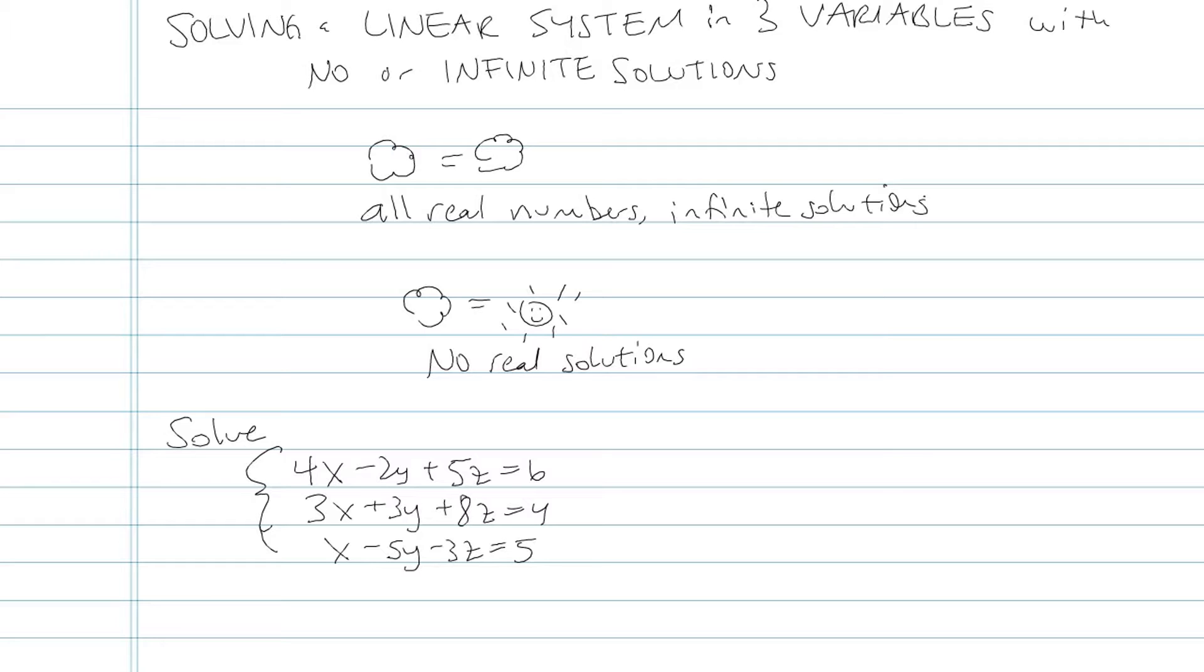And if we have three planes that intersect in infinitely many points, we call that infinite solutions. Sometimes you have three planes that will intersect at a line, and that's something that's a little bit different. That's still a version of infinite solutions because a line, of course, has infinitely many points on it.